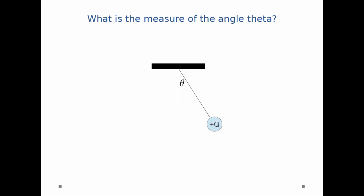So, the pendulum bob has some mass, so we know F is equal to mg pointing downward. We know that the bob has some charge, and so it's going to feel a force due to the electric field, an electric force.